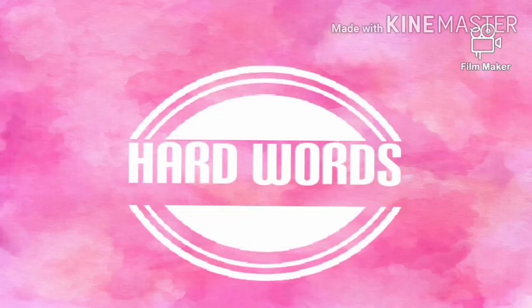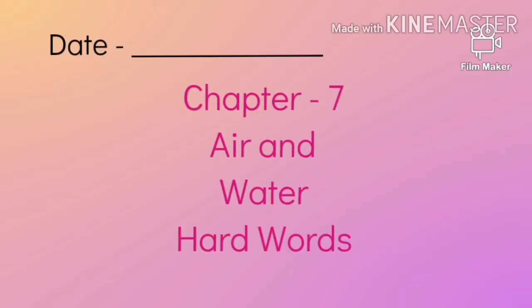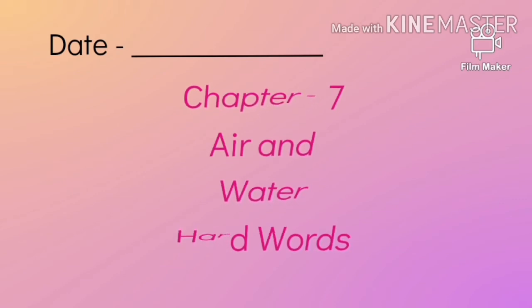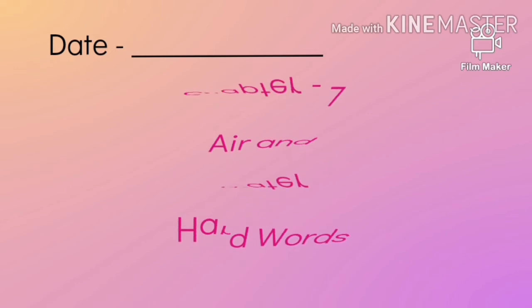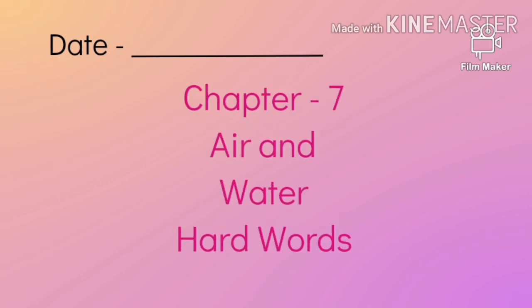So, my dear students, यह तो हमारा Chapter 7 explanation था. Chapter 7 explanation is completed. It's time for hard words. So my dear students, let's start hard words. Firstly open your notebooks. Now mention the date. Next, write the heading: Chapter 7 — Air and Water. Then write: Hard words.